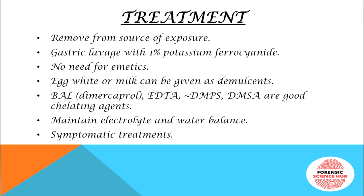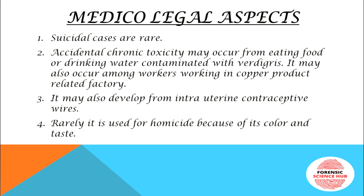Egg white or milk can be given as demulcents. Chelating agents — BAL, EDTA, DMPS, and DMSA — are all effective, as discussed for other metallic poisons like mercury, arsenic, and lead. Electrolyte and water balance must be maintained, and symptomatic treatment should be done accordingly.